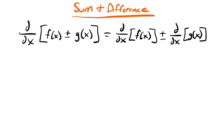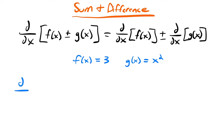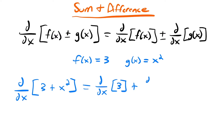Our last set of rules in this lesson are the sum and difference rules. These say that when we take a derivative of two functions added or subtracted together, it equals the derivative of each function separately, added or subtracted. For example, if f of x equals 3 and g of x equals x squared, the derivative of those two functions added together — 3 plus x squared — equals the derivative of 3 plus the derivative of x squared.